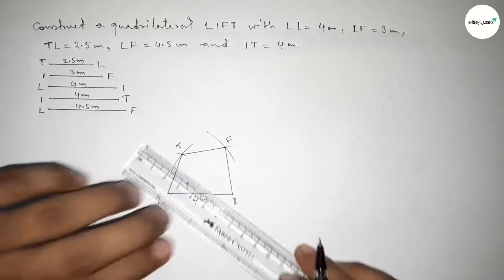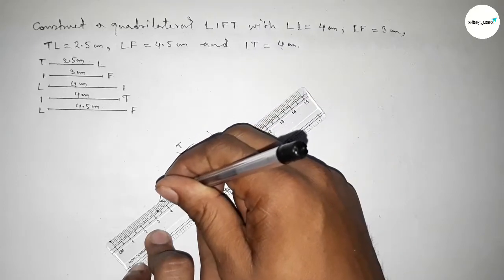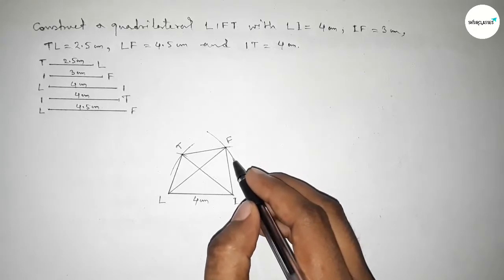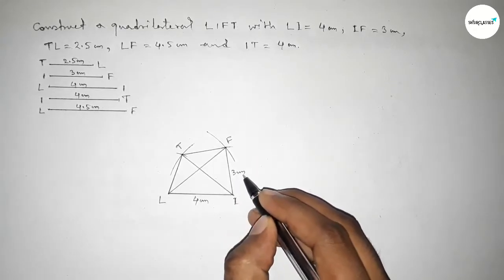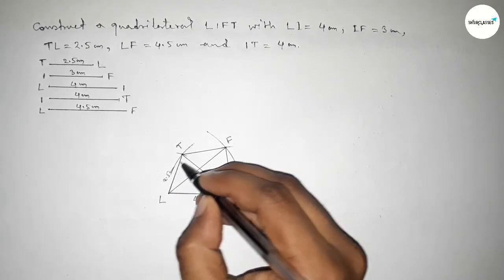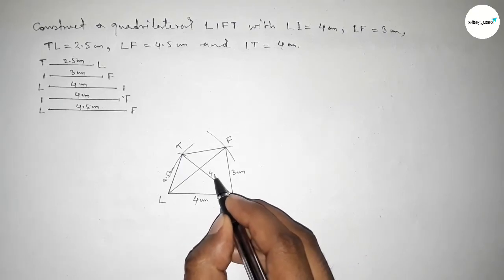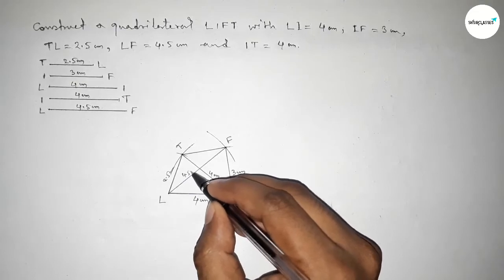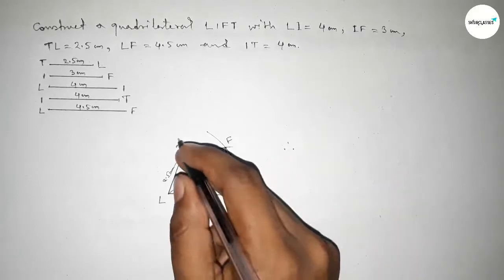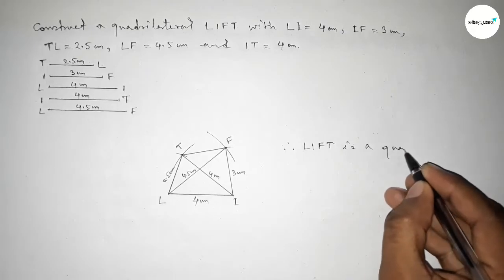Joining the diagonals: this side is 4 centimeter. Now joining the diagonals IT and the diagonal LF. So this side is 4 centimeter, this side 3 centimeter, this side 2.5 centimeter, and this side 4.5 centimeter. The diagonal IT is 4 centimeter and the diagonal LF is 4.5 centimeter. Therefore LIFT is a quadrilateral.